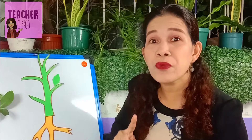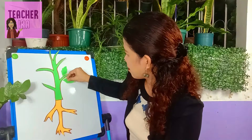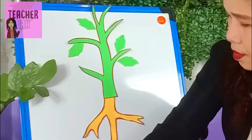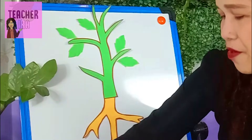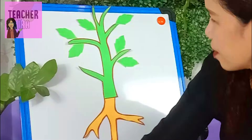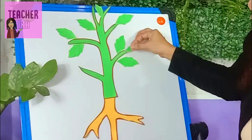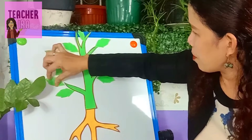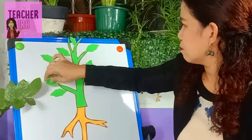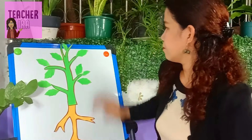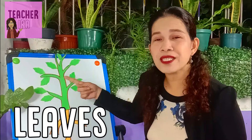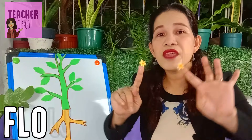Let me add some more leaves so we have leaves on the plant — here, here, and here. The plant looks better now. By the way, this is a tomato plant — have you seen tomatoes? Now, what do we call these? Very good — we call these leaves!